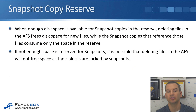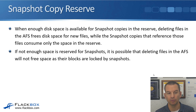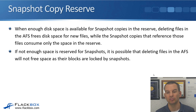When enough disk space is available in reserve for snapshot copies, deleting files in the active file system frees disk space for new files, while the snapshot copies that reference those files consume only the space in the reserve. If not enough space is reserved for snapshots, it's possible that deleting files in the active file system will not free space, as their blocks are locked by snapshots.